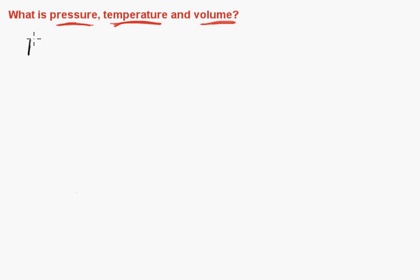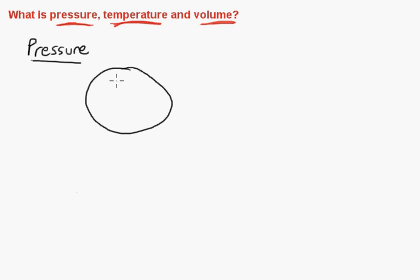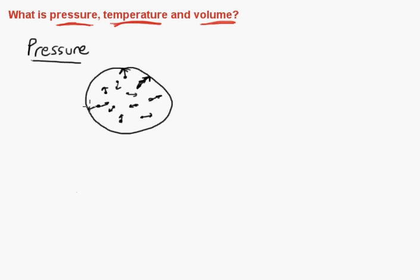The first one is pressure. Let's imagine that you have a container holding some amount of gas, and those gas particles are moving around in random directions, bouncing into each other and off the walls of the container. Pressure is basically how hard, or with how much force, these particles are hitting the walls of the container. Pressure is a measurement of the amount of force divided by the unit area — it's force divided by area.